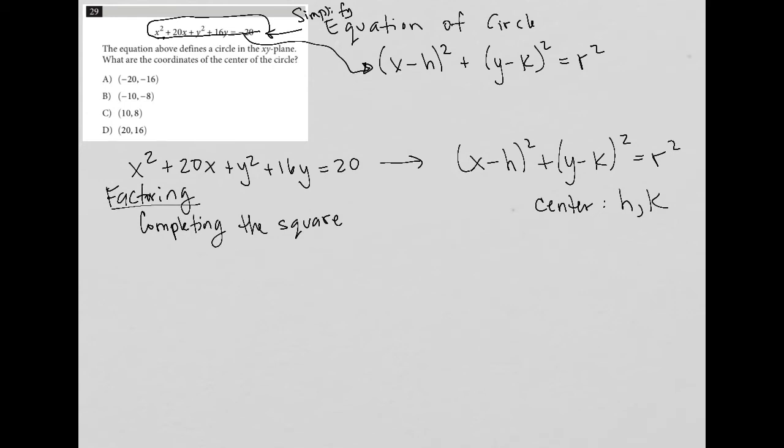The first thing I'm going to deal with is my x's. So I have x squared plus 20x, put a space here, and then do my y's. So I have plus y squared plus 16y plus space, and then equals negative 20 plus space.